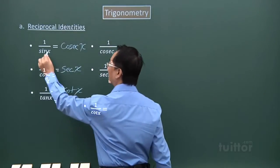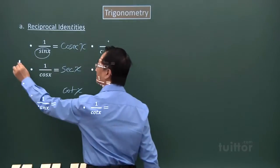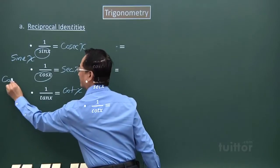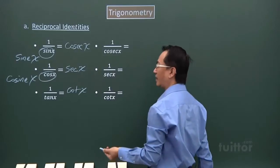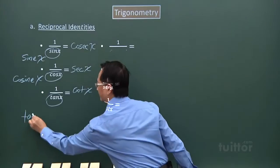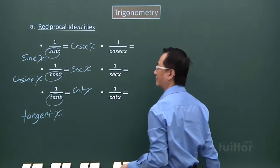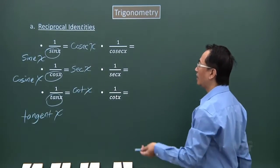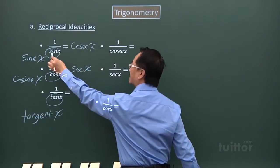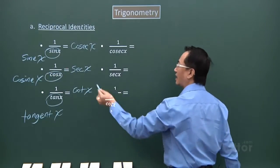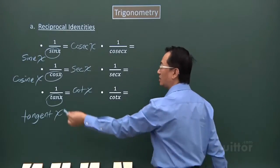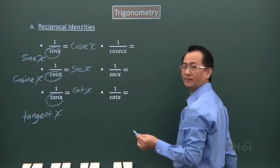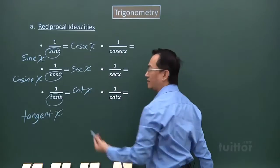These are short forms for sin x, cos x, and tangent. So over here we have cosecant, secant, and cotangent. It's easier to remember this way: sin starts with an 's', then you have cosecant which starts with a 'c'. Similarly, cos starts with 'c' and its reciprocal, secant, starts with 's'. Cotangent and tangent are also a pair.